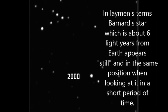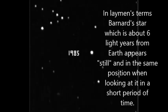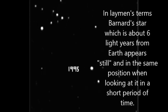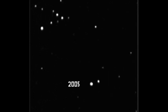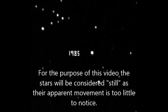In layman's terms, Barnard's Star, which is about 6 light years from Earth, appears still and in the same position when looking at it in a short period of time. For the purpose of this video, the stars will be considered still as their apparent movement is too little to notice.